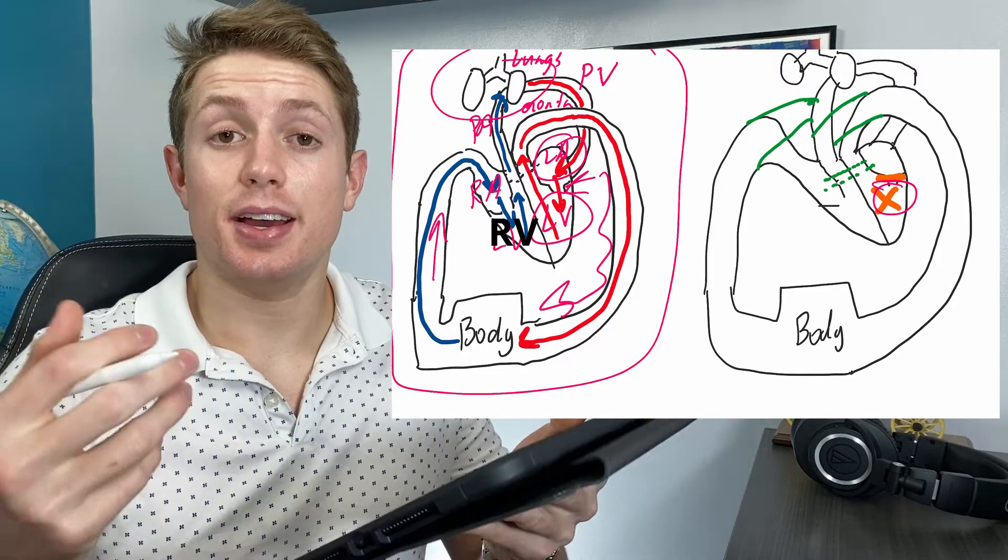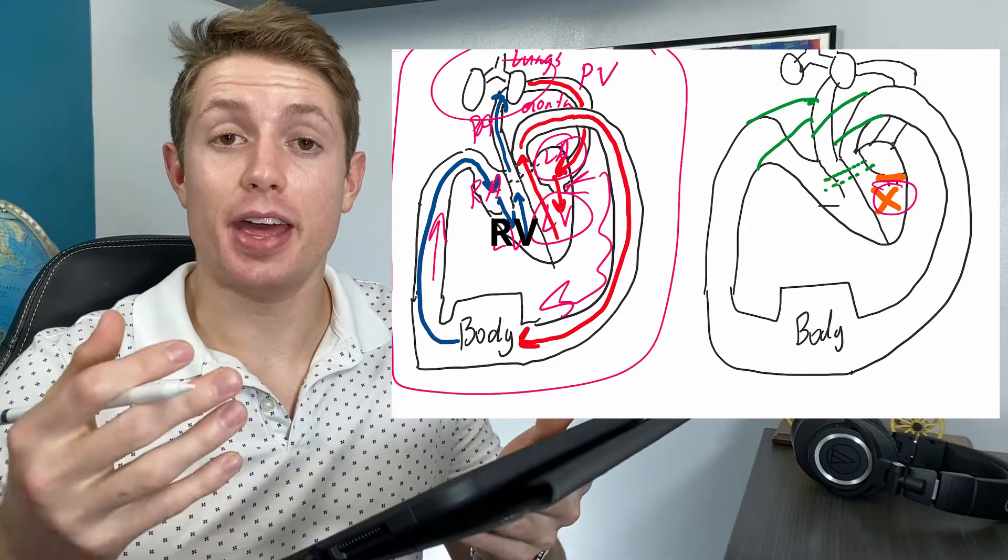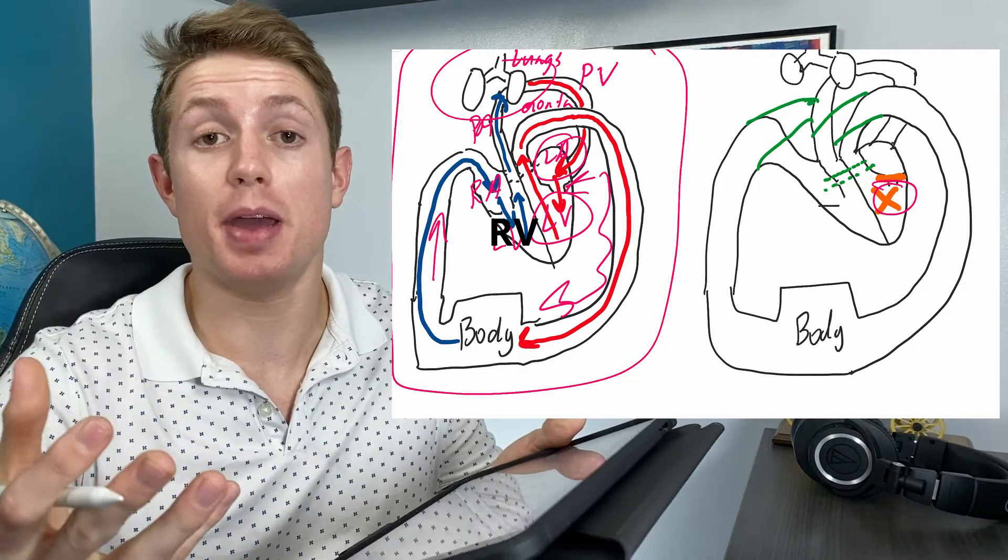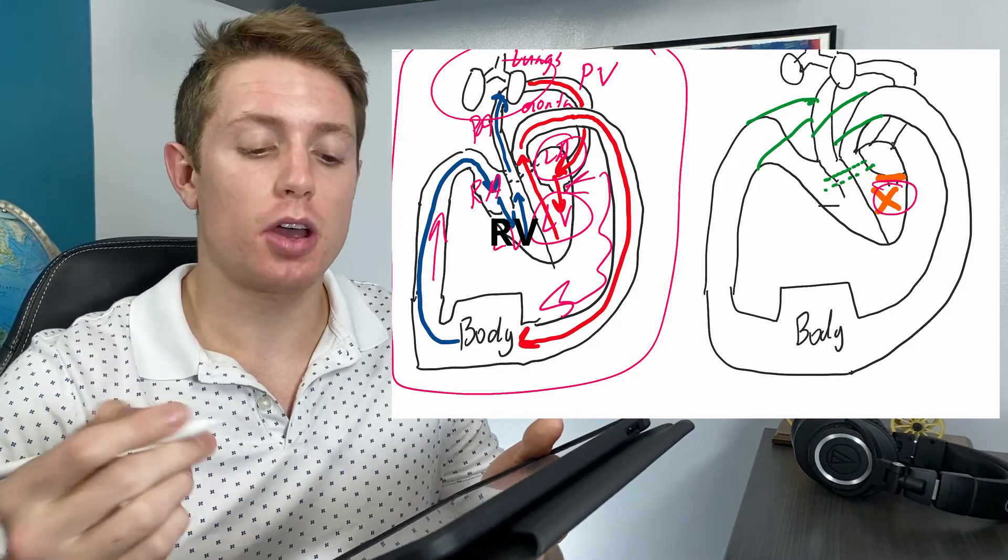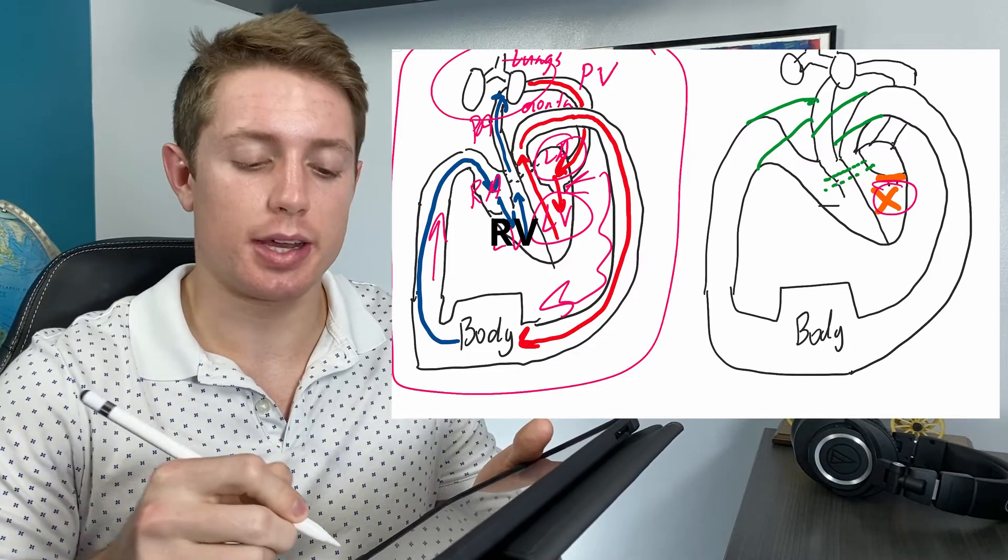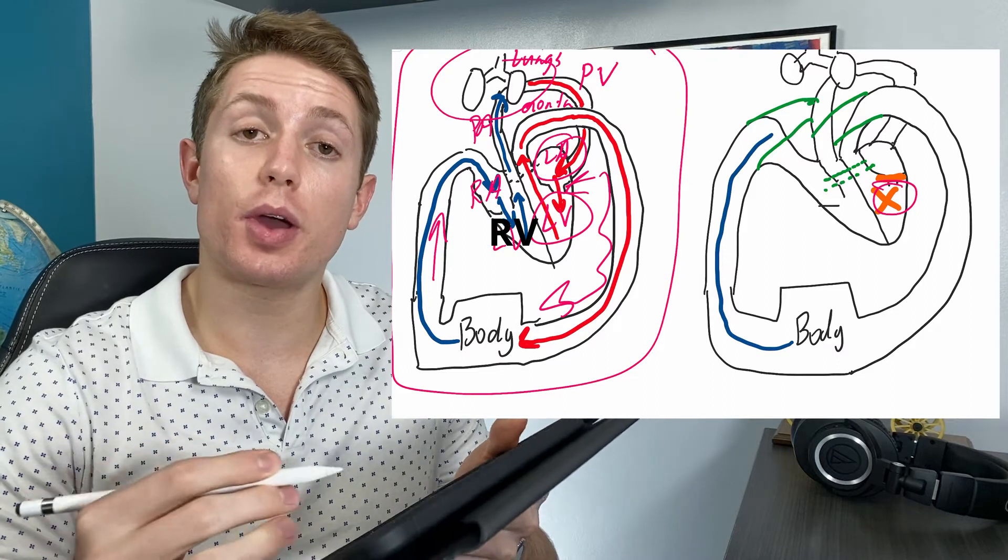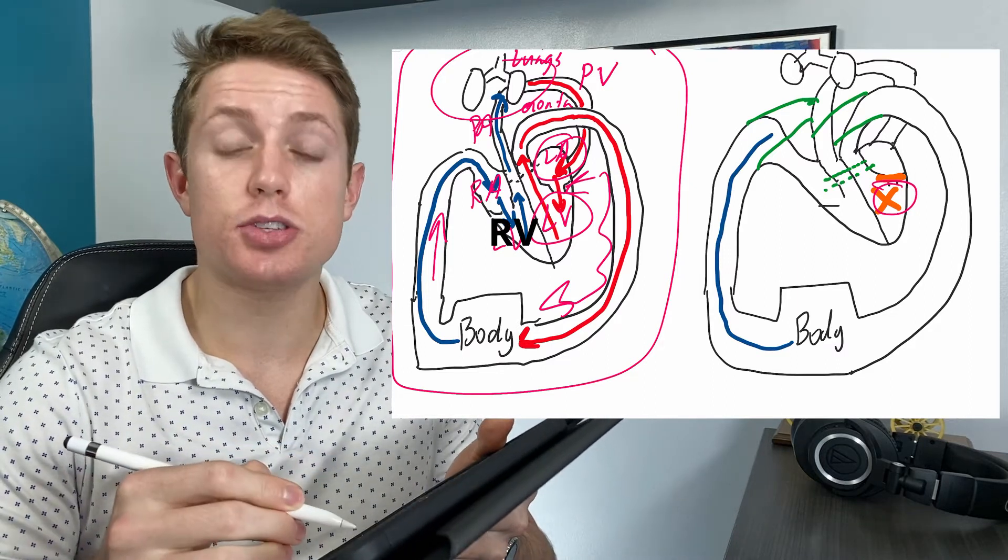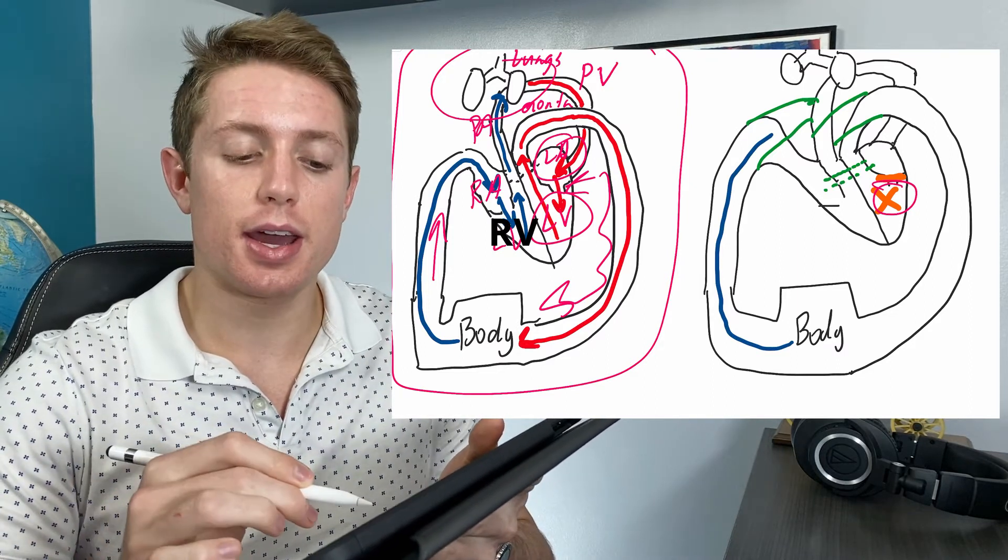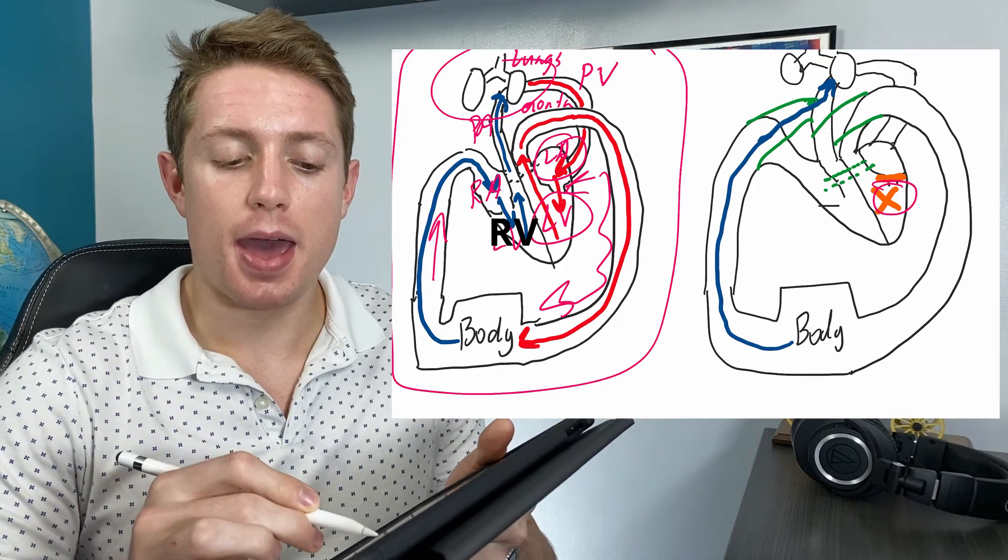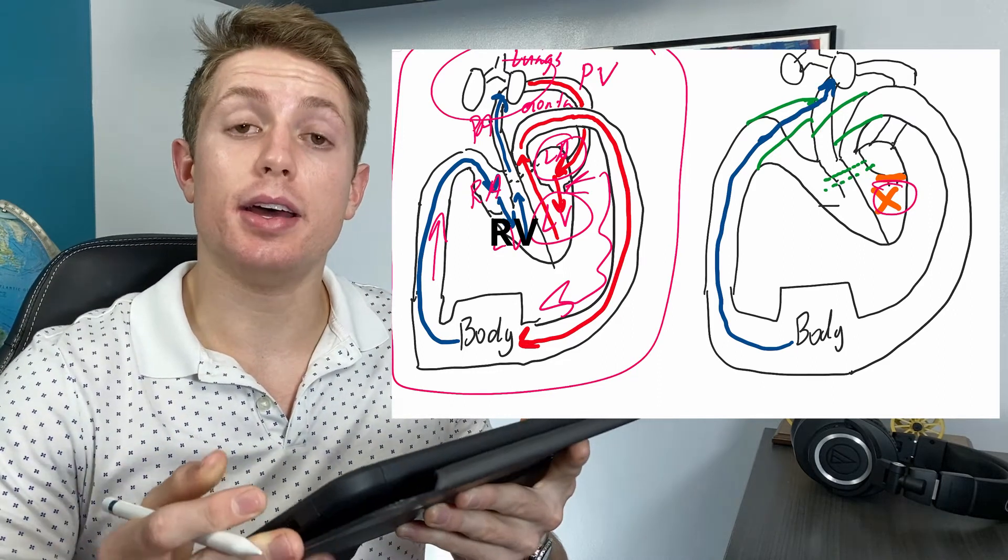All right, so what is this Fontan repair that gets around this problem of not having a left ventricle, which is supposed to be the main pump pumping blood to the entire body? So now what they do is three things. So if we trace the deoxygenated blood, rather than going from the inferior vena cava into the right atrium, they do a connection where it goes directly to the pulmonary arteries and it bypasses this whole side of the heart.